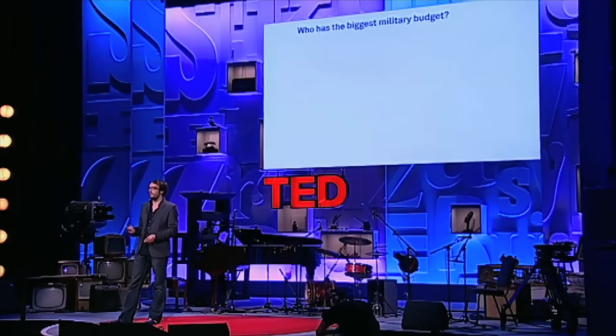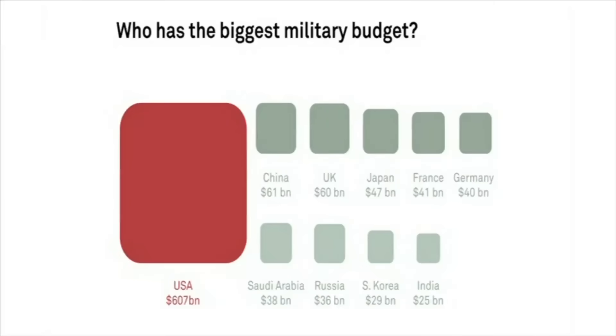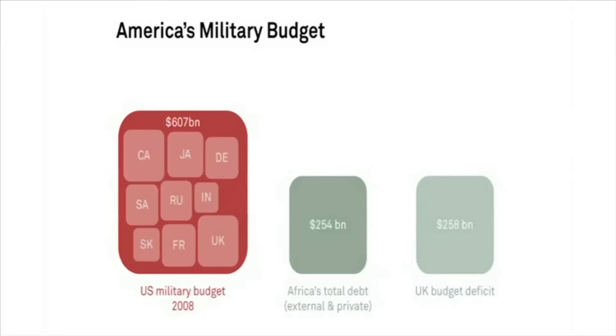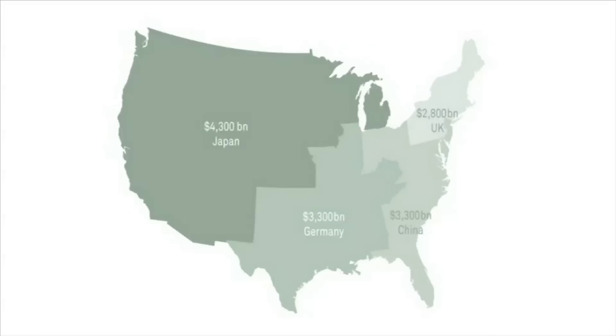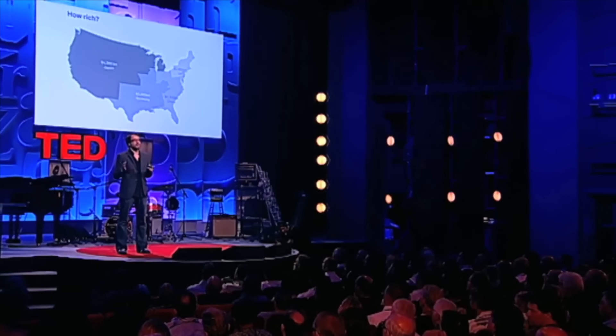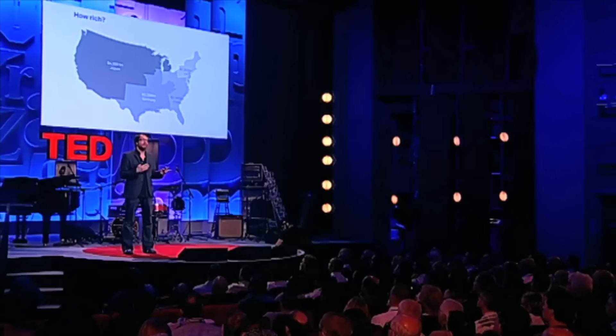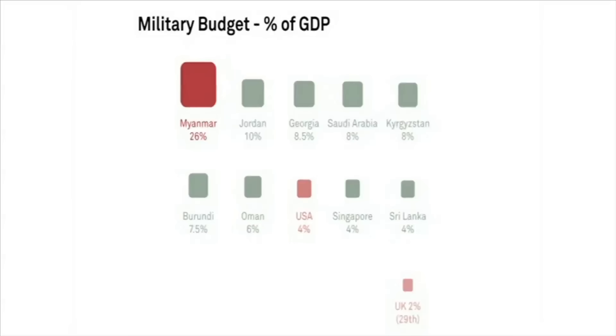We can use this new kind of language to alter our perspective or change our views. Who has the biggest military budget? It's got to be America — massive — 607 billion in 2008. So massive, in fact, that it can contain all the other military budgets in the world inside itself. You can see Africa's total debt there, and the UK budget deficit for reference. So that might well chime with your view that America is a sort of warmongering military machine. But is it true that America has the biggest military budget? Because America is an incredibly rich country. So to be fair and to alter our perspective, we have to bring in another data set — GDP. Who has the biggest budget as a proportion of GDP? That changes the picture considerably. Other countries pop into view that you perhaps weren't considering, and America drops into eighth.